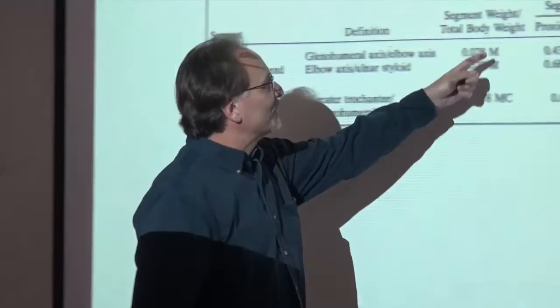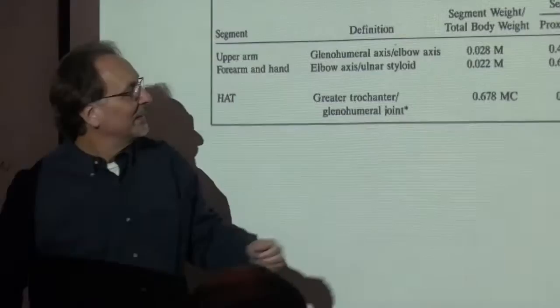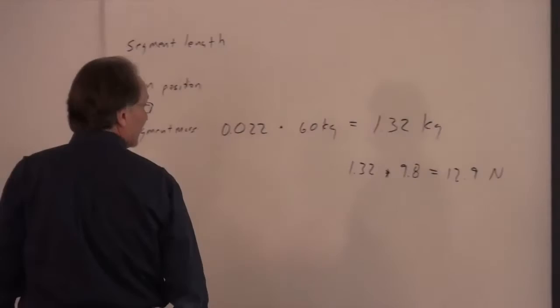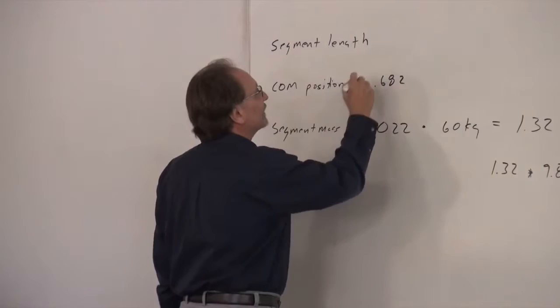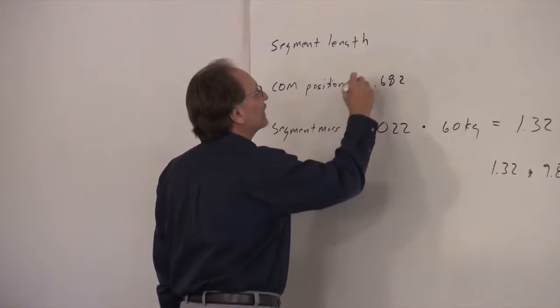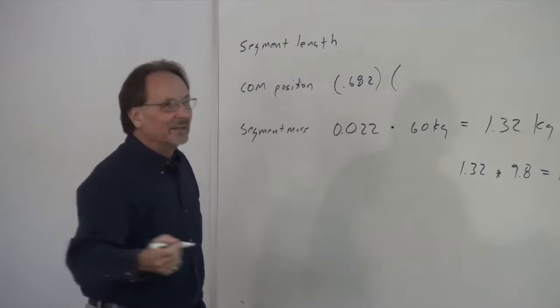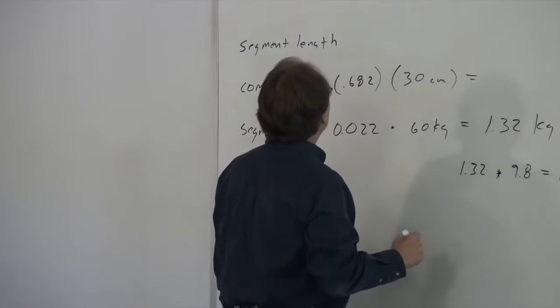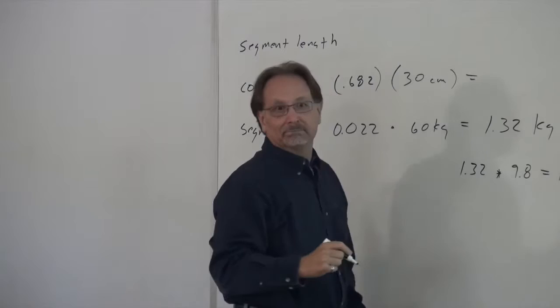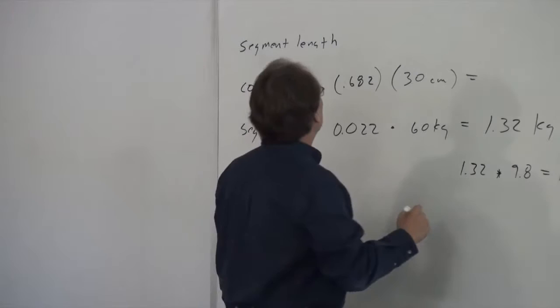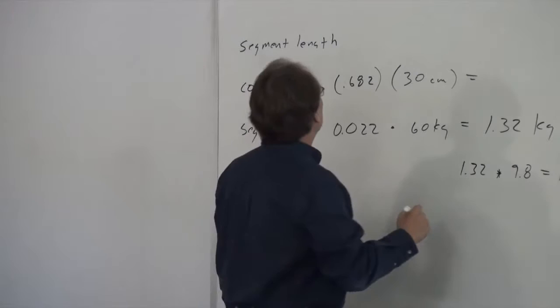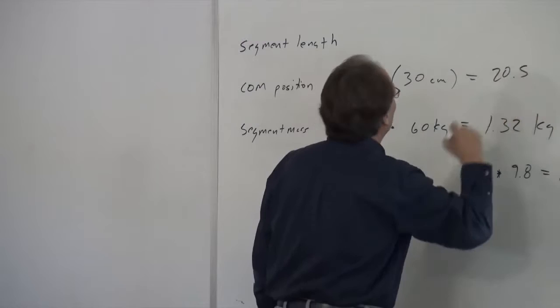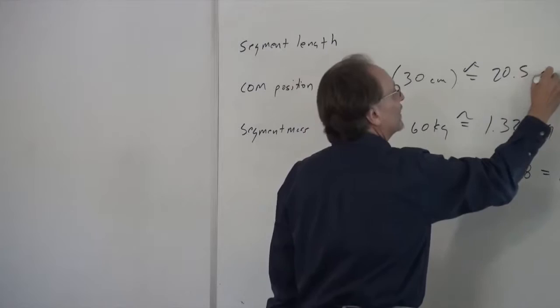Using always the proximal end, the center of mass position from the proximal end for the forearm and hand is 0.682. So the center of mass position is 0.682 times the segment length. If the segment length is about 30 centimeters, then 0.682 times 30 is 20.46 — roughly 20.5 centimeters. That's the distance to the center of mass from the proximal end of the limb.